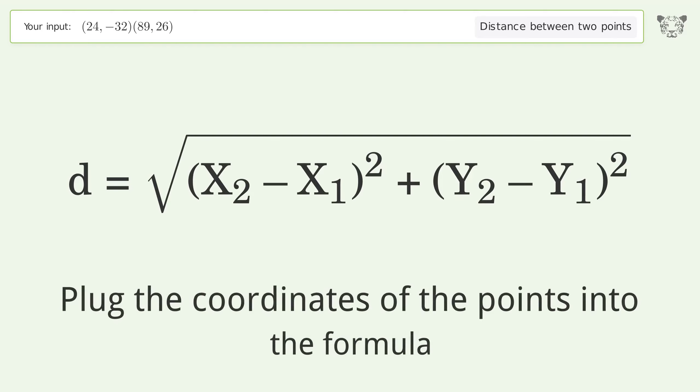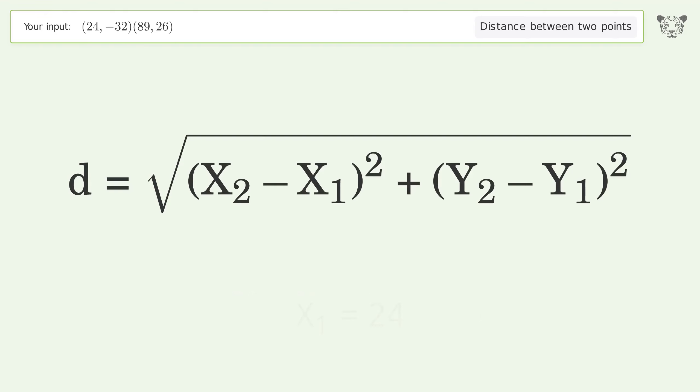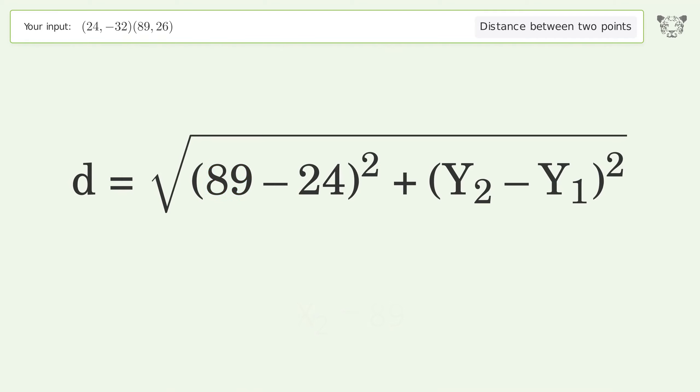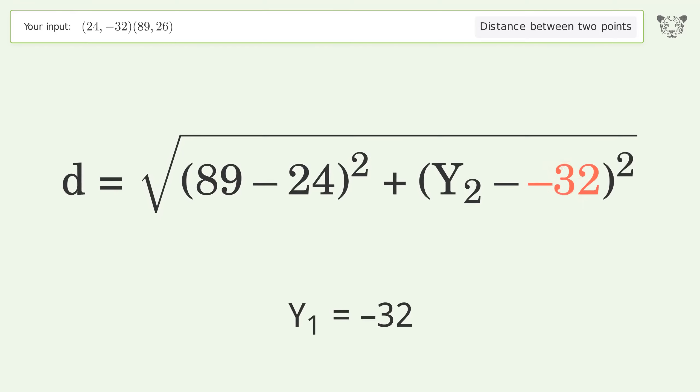Plug the coordinates of the points into the formula. x1 equals 24, x2 equals 89, y1 equals negative 32, y2 equals 26.